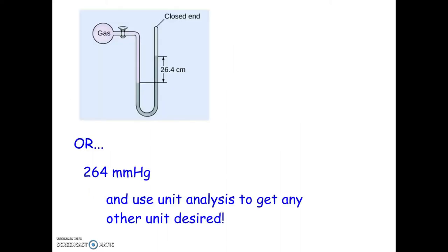However, it might be easier to just use unit analysis. This is mercury filling the tube. So because it's raising the height of the column 26.4 centimeters, that's 264 millimeters of mercury of pressure. And then I can use unit analysis to convert to any other unit that I want.